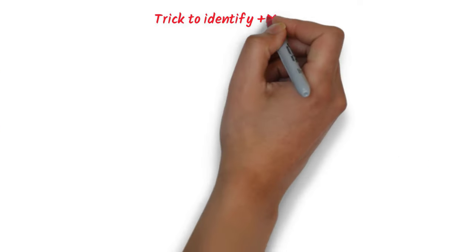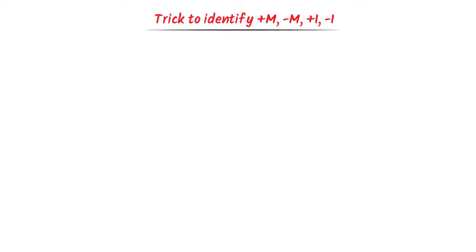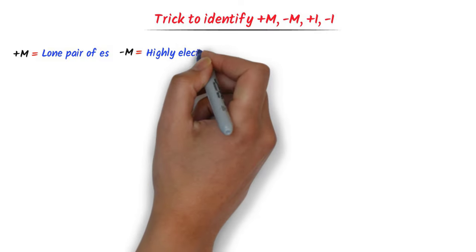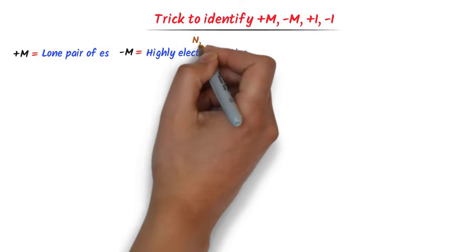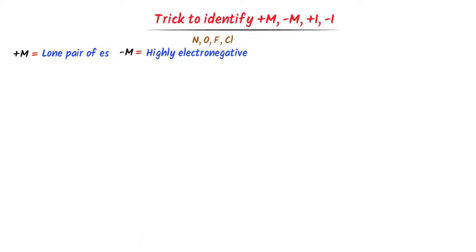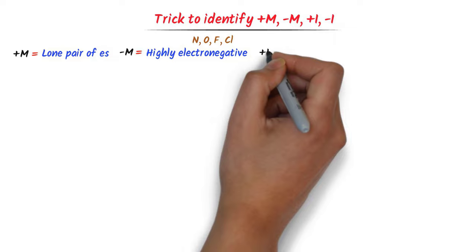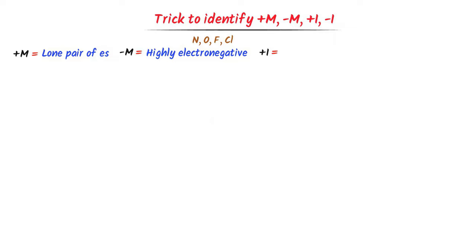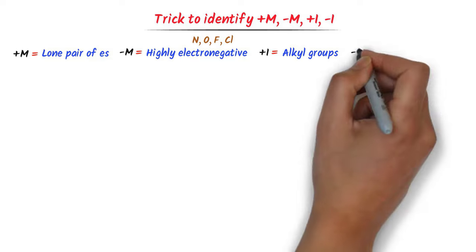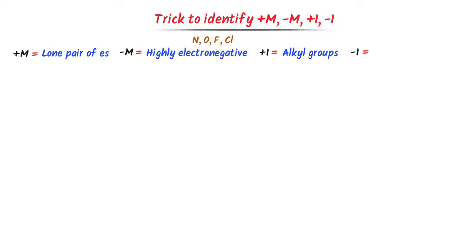Now let me teach you the super easy trick to identify positive M, negative M, positive I, and negative I effect in any compound. Positive M effect is shown by groups which have a lone pair of electrons, while negative M effect is shown by groups which have highly electronegative atoms like nitrogen, oxygen, fluorine, etc. On the other hand, positive I effect is shown by alkyl groups, while negative I effect is shown by functional groups.